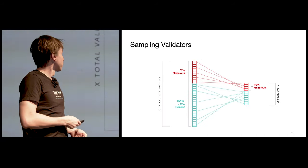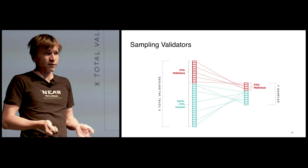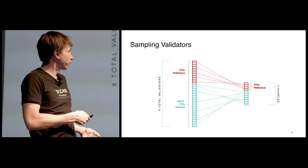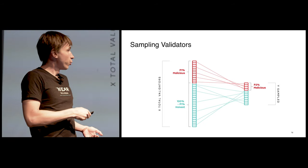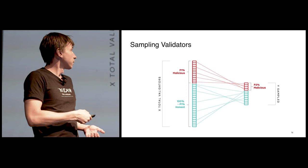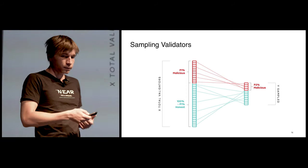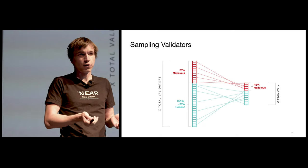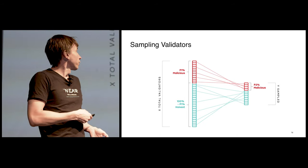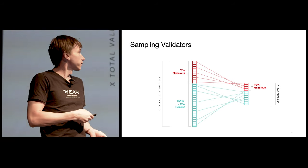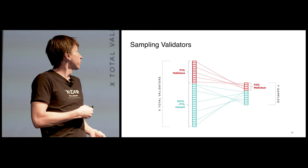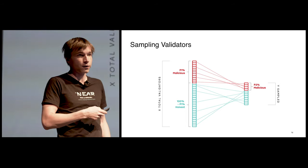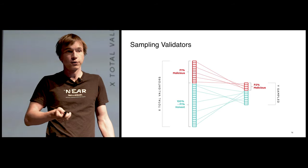The idea here is that if we believe that the total population has less than 25% malicious actors, then once we sample, let's say 100 of them, we can do some mathematical modeling and show that the probability of having 33% of malicious actors in the shard is very low. Let's say the full population is 10,000 and you sample 100. If you know there's 25% here at most, then the probability that you have 33% malicious actors here is very low. It can be considered to be zero.